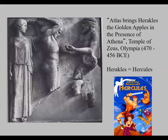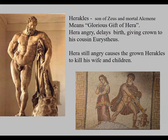We're going to talk about one particular haut relief that has been somewhat destroyed over time: 'Atlas Brings Heracles the Golden Apples in the Presence of Athena.' This is a haut relief on the temple of Olympia. We know Heracles as Hercules. He's the son of Zeus and the mortal Alcmene. Zeus was always going around hooking up with mortal women, which really angered his wife Hera.